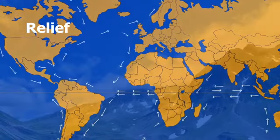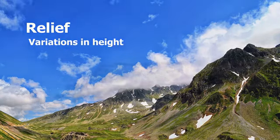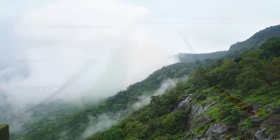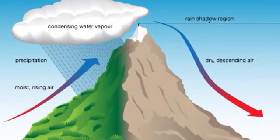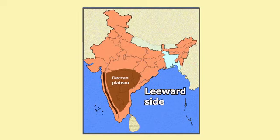The last factor is relief, which refers to variation in height. Relief plays a major role in determining the climate of a place — mountainous areas have high relief, while plateaus and plains have relatively low relief. High mountains act as barriers for cold and hot winds. They may also cause precipitation if they lie in the path of rain-bearing winds, whereas the leeward side of mountains remains dry. The Western Ghats obstruct the southwest monsoon winds and are responsible for heavy rainfall along the western coast, whereas the Deccan Plateau forms the leeward side where there is relatively low rainfall.